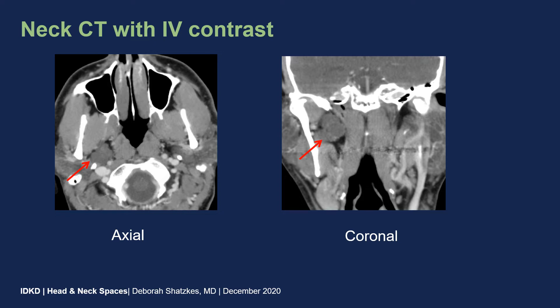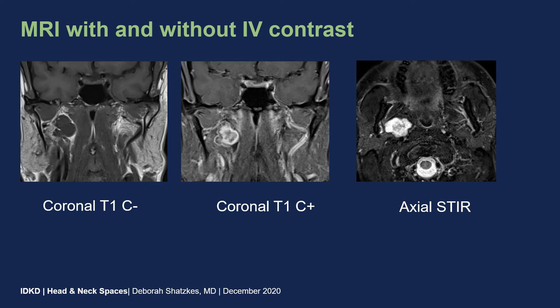The patient was sent for an MRI for further characterization. We underwent MRI with and without contrast, and we can see on the coronal T1 series without contrast that there is a lobular, well-demarcated mass lateral to the nasopharyngeal airway. On the contrast-enhanced image, we can see that it does show some heterogeneous contrast enhancement, and on an axial STIR image, we can see this very lobular mass that shows very bright T2 signal intensity.